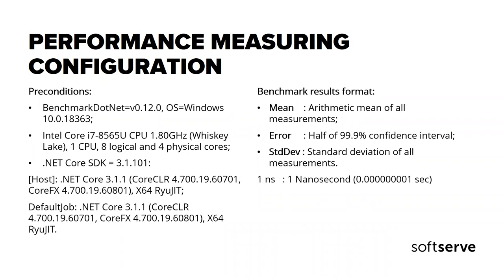The main value in the results is the mean — the arithmetic mean of all measurements. The measurements were performed in nanoseconds. The results output is quite flexible in BenchmarkDotNet, however I used the default configuration because it is enough to demonstrate the results in our presentation today.